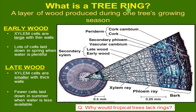What is a tree ring? It is a layer of wood produced during one tree's growing season. In early wood, xylem cells are large with thin walls — lots of cells are laid down in spring when water is plentiful. Late wood: the cells become smaller with thick walls, and fewer cells are laid down in summer when water is less available. We have inside our tree ring the xylem ray and the phloem ray, composed of the bark. In the xylem we have early wood, late wood, we can see the vascular cambium itself, the secondary phloem, and the periderm — composed of cork cambium and cork — that's like our skin for protection against herbivores and parasites.